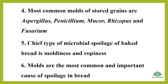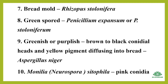The chief types of microbial spoilage of baked bread are moldiness and ropiness. Molds are the most common and important cause of spoilage in bread. The common bread mold is Rhizopus stolonifer, and green spore molds include Penicillium expansum and Penicillium stolonifer.